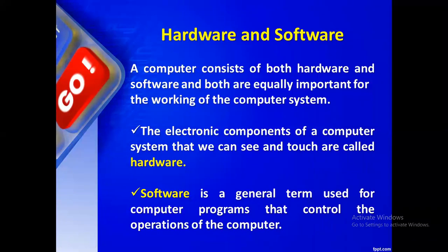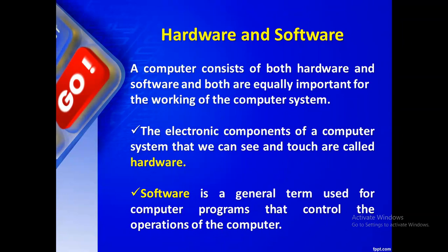Now we move to a new concept: hardware and software. Hardware means the physical components of a computer — components we can touch and feel. For example, a monitor, mouse, keyboard, hard disk, and RAM are all hardware because we can physically touch and feel them.